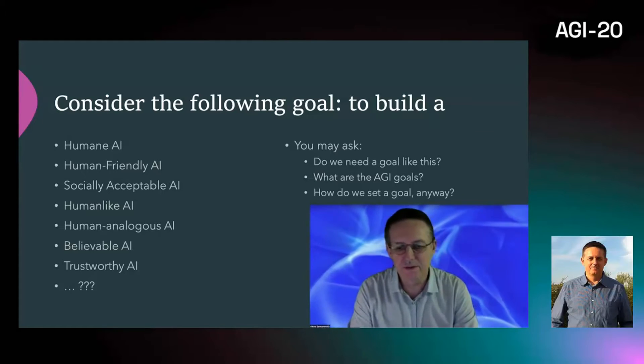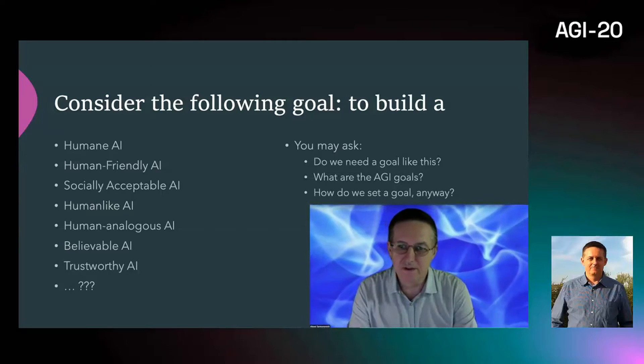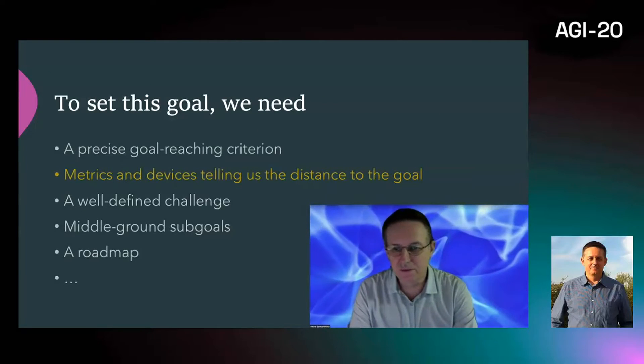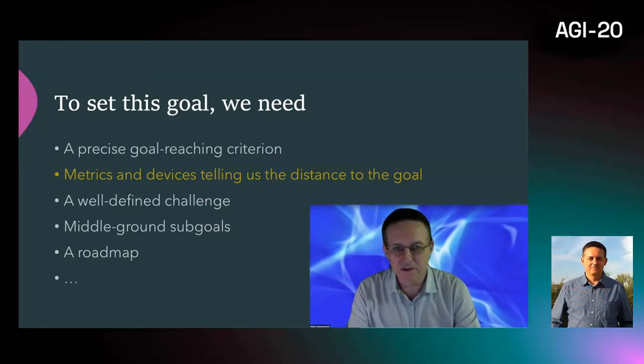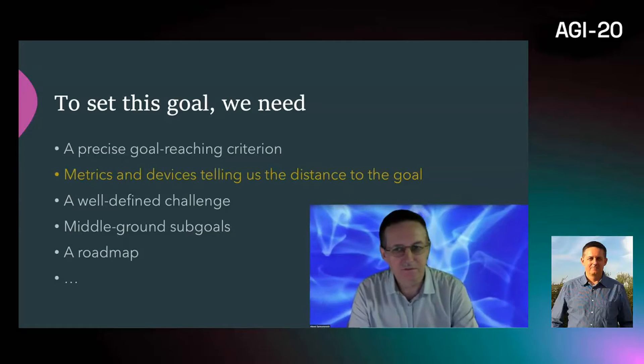How do we set this goal? You may ask, why do we need this goal at all? Well, AGI must have some goals after all, but the problem is that we need to define them. In order to define a goal like this, we need a precise goal-reaching criterion, metrics and devices telling us the distance to the goal, a well-defined challenge, middle-ground sub-goals, a roadmap, and so on.